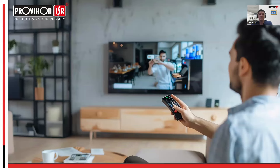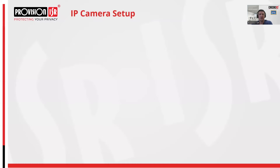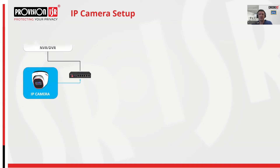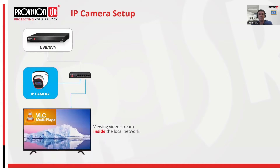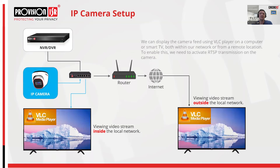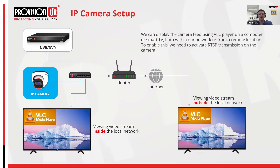Whether your camera is connected through an NVR, in a remote location, or directly to your home network, this tutorial will walk you through the process effortlessly. We'll be utilizing the free VLC media player, which is compatible with installation on any smart TV. In VLC, we'll set up the link to connect either to a single camera within our local network or a camera located remotely. Additionally, we'll explore connecting to specific channels on the NVR rather than directly.